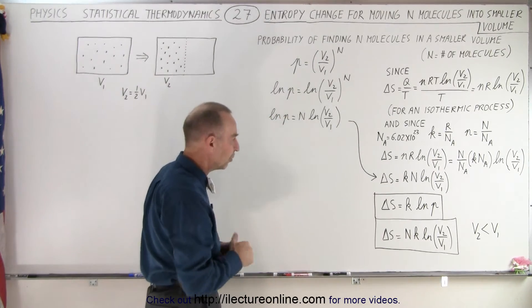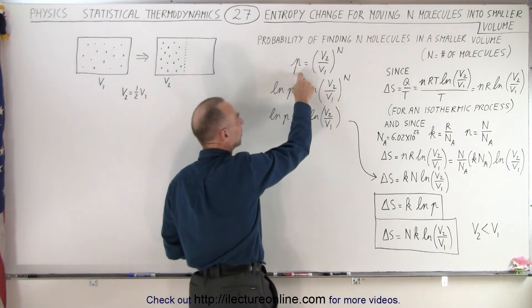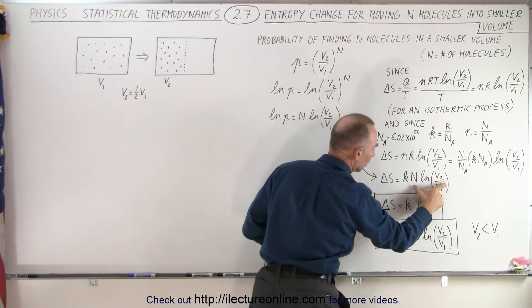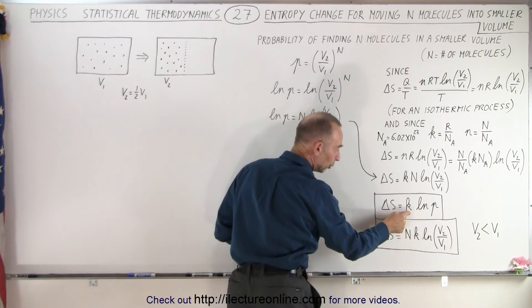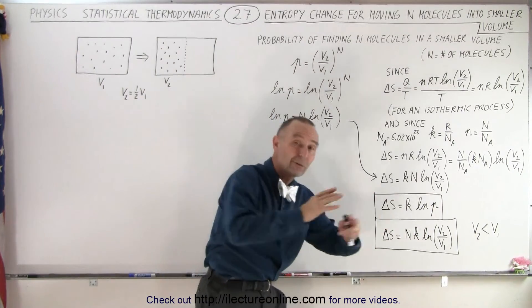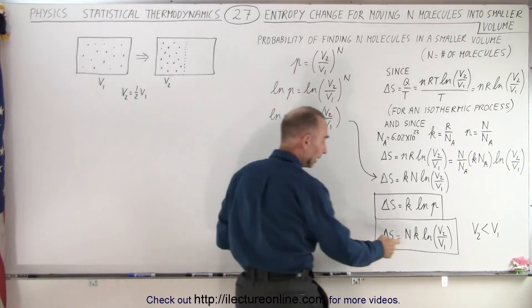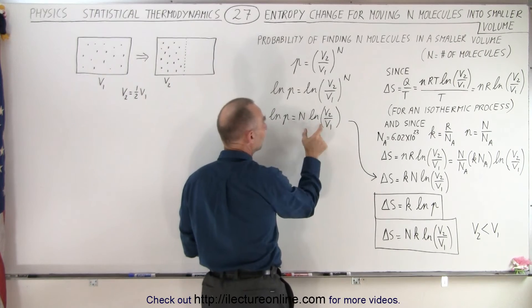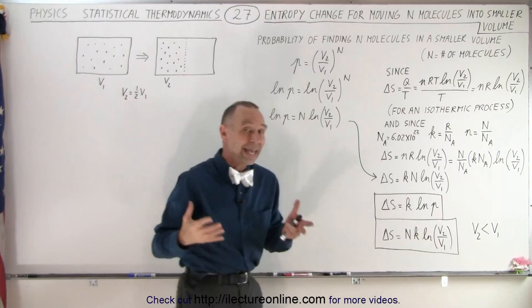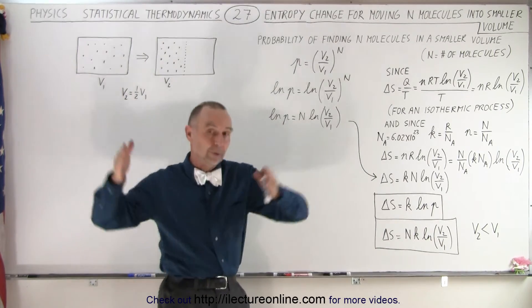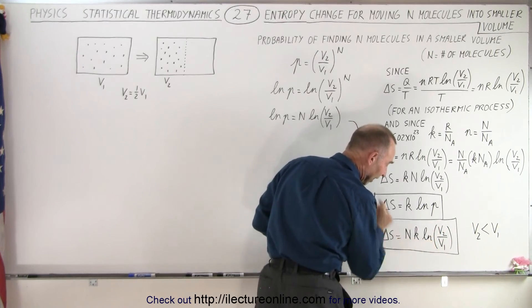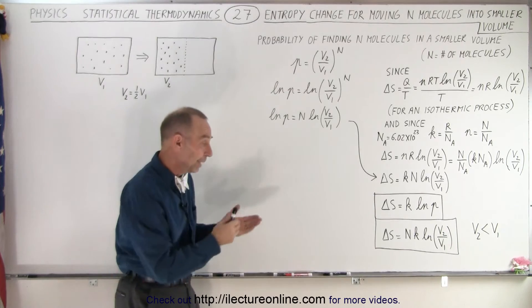Assuming V2 is smaller than V1, going back to the probability definition, we can substitute and write the change in entropy as simply ΔS = k_B · ln(P) — Boltzmann's constant times the natural log of the probability of going from a larger volume to a smaller volume with N molecules. We can also write it as N times the natural log of the ratio of the volumes. Either form describes the entropy change. Since V2/V1 is less than one, its natural log is negative, giving us the expected entropy drop.